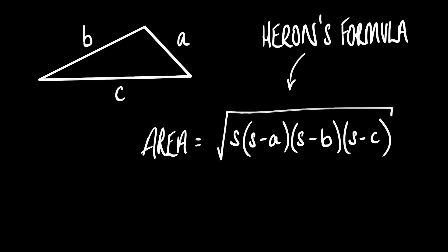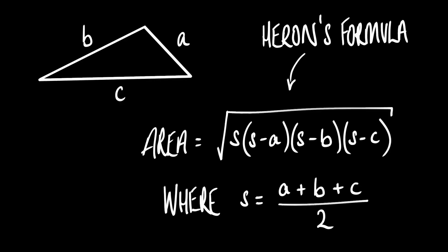Well, there is — Heron's formula! It looks a little something like this, where S is half the perimeter. I can show you how it's derived if you like. Yeah, go on, I'm intrigued. I'm assuming Pythagoras comes into it somewhere?